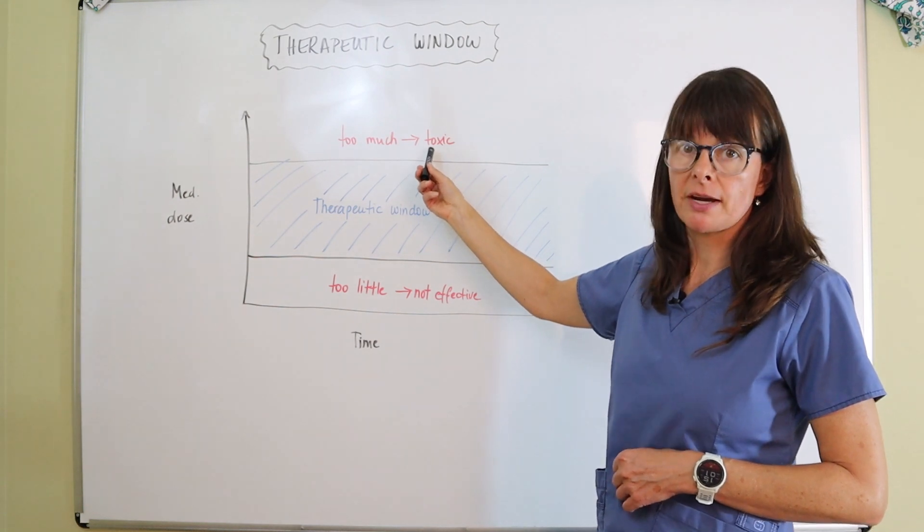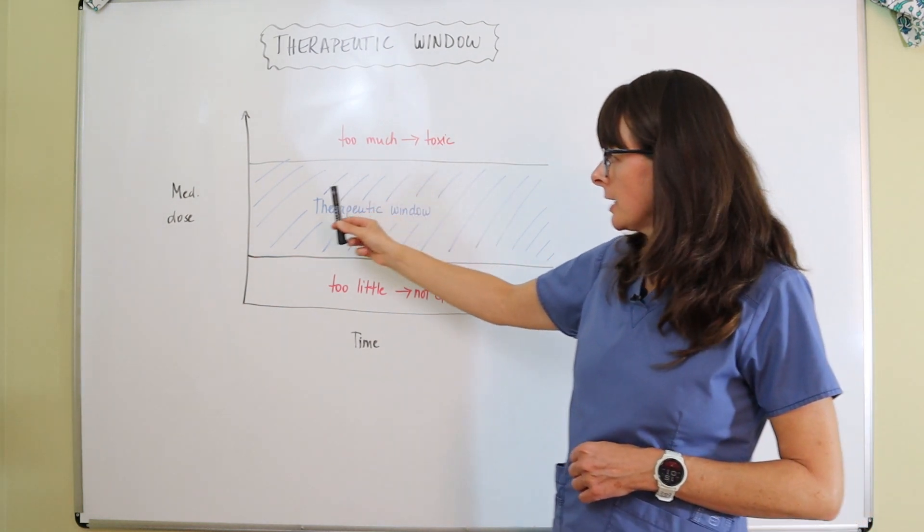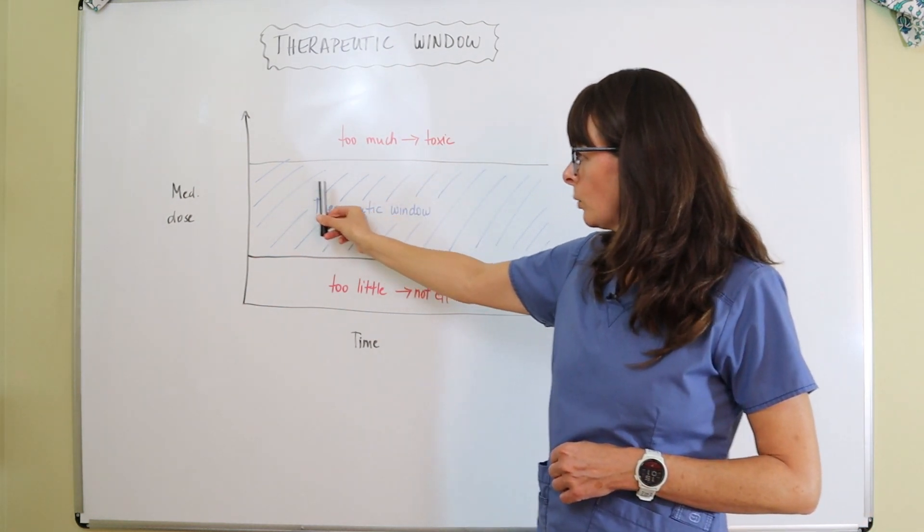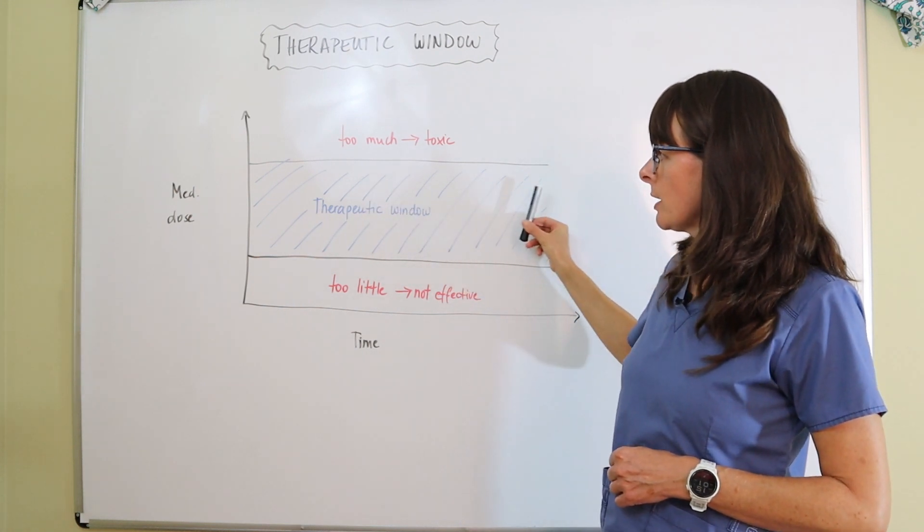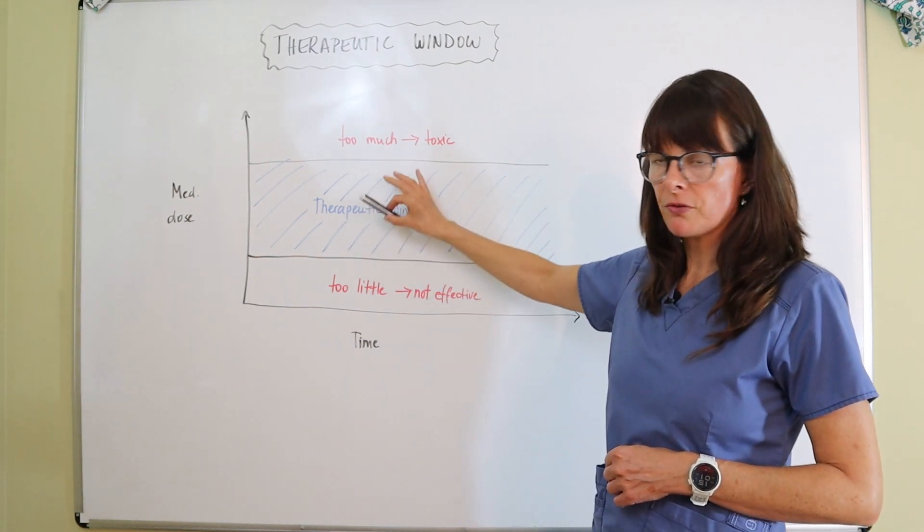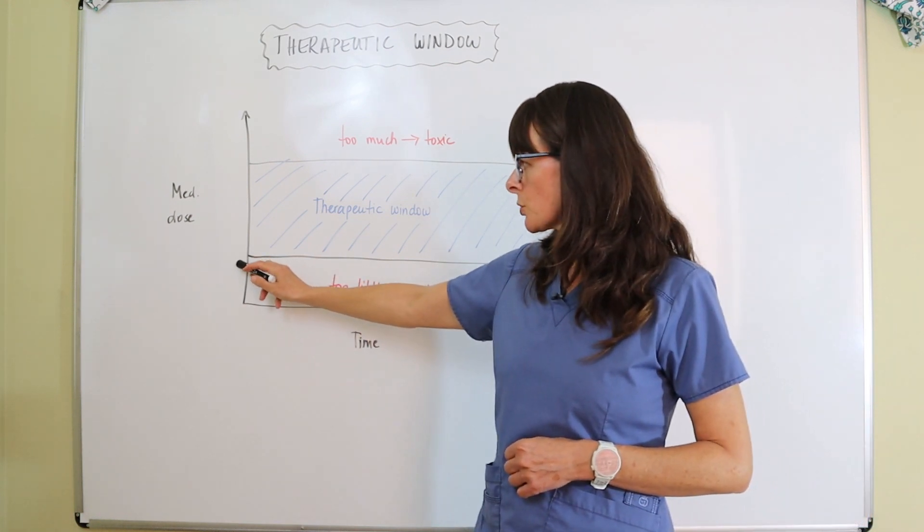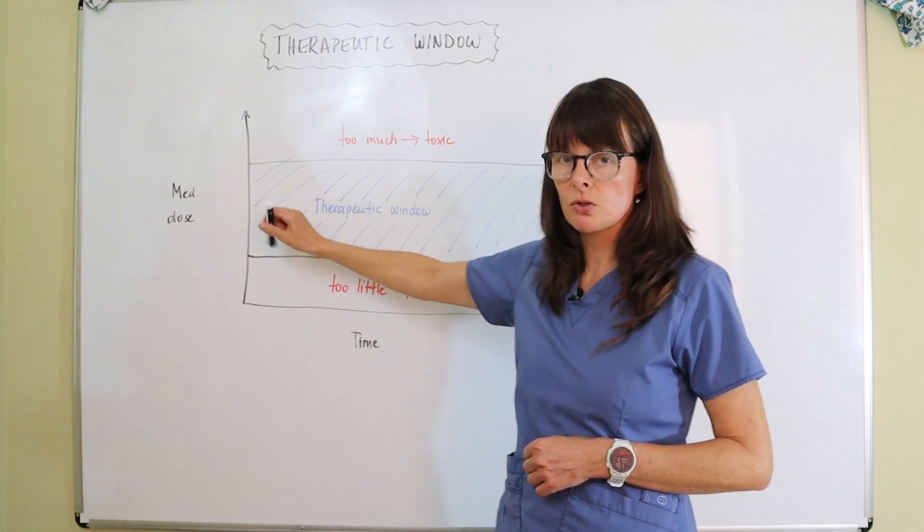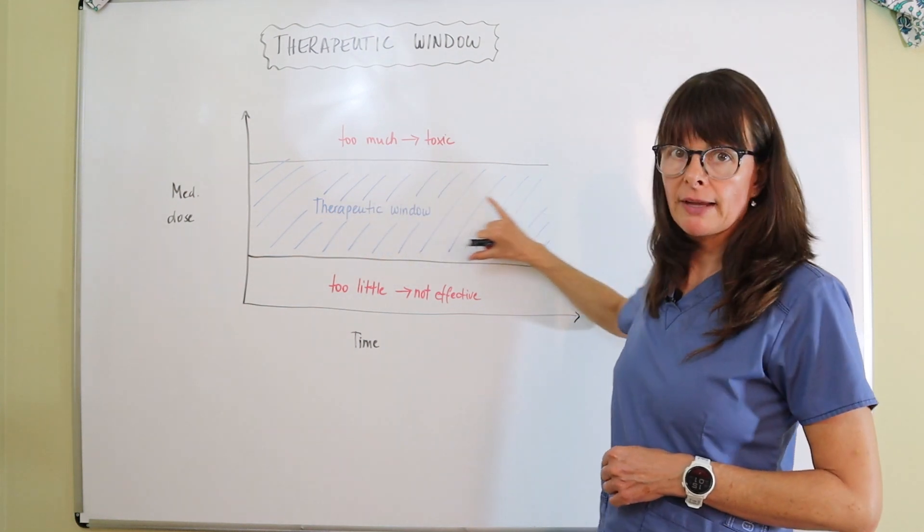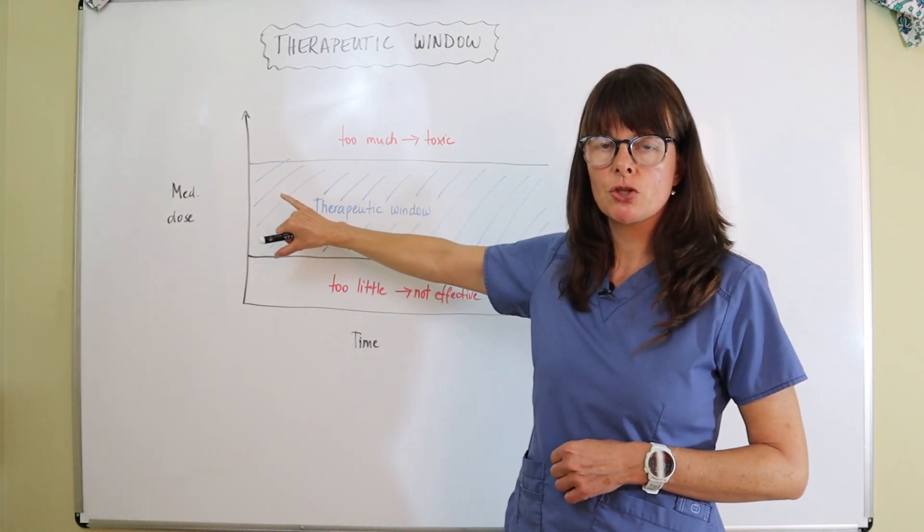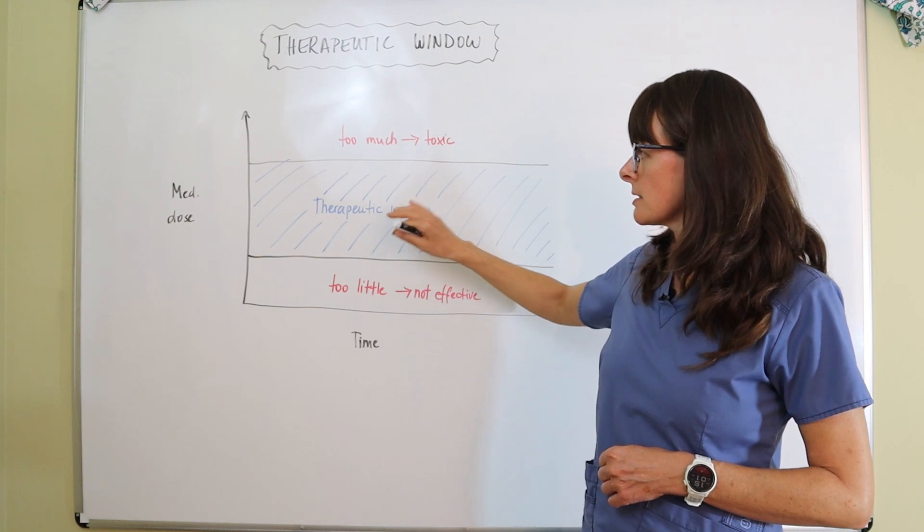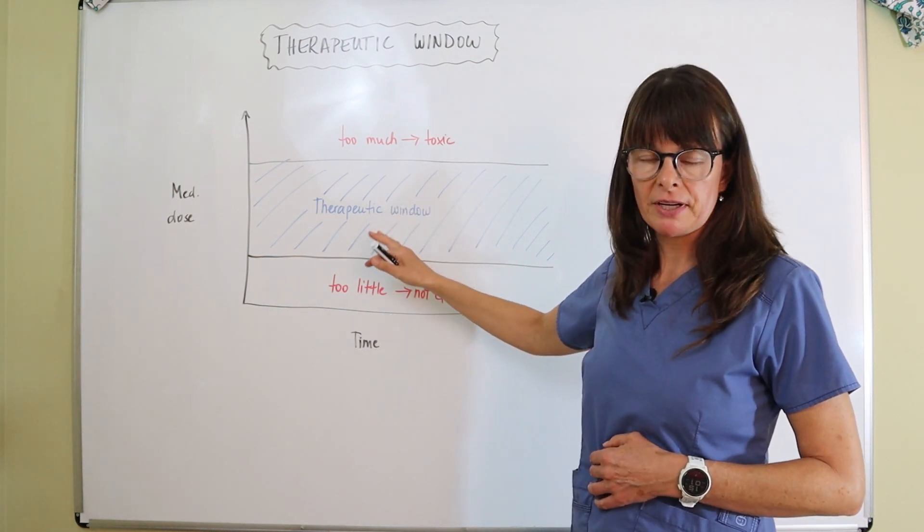In between we have the therapeutic window which is a pretty large reference range where we know if the medication from a certain dose to another certain dose is administered, the patient's level that they have flowing of this medication throughout their body is achieving the therapeutic effects that the medication has.